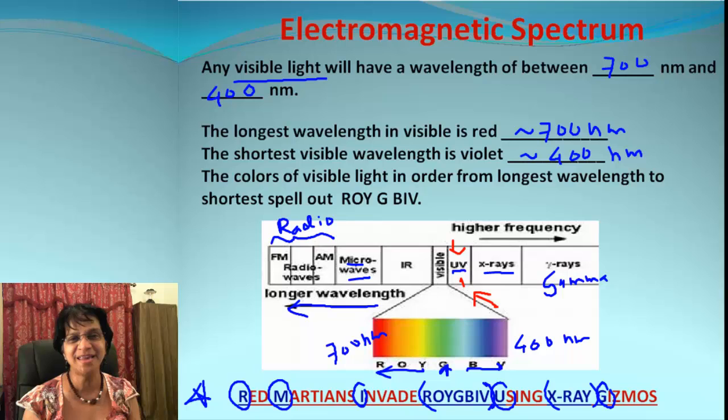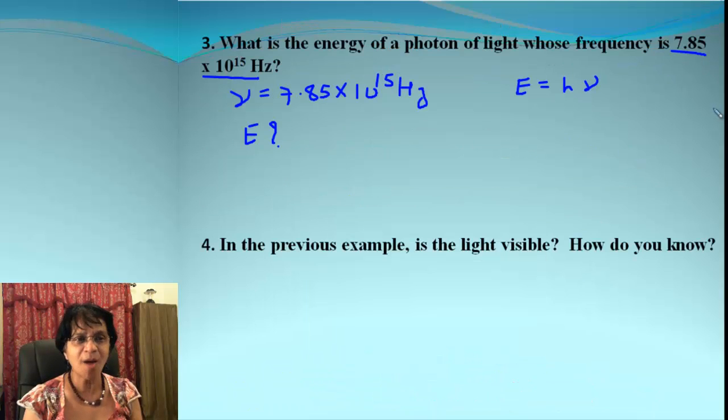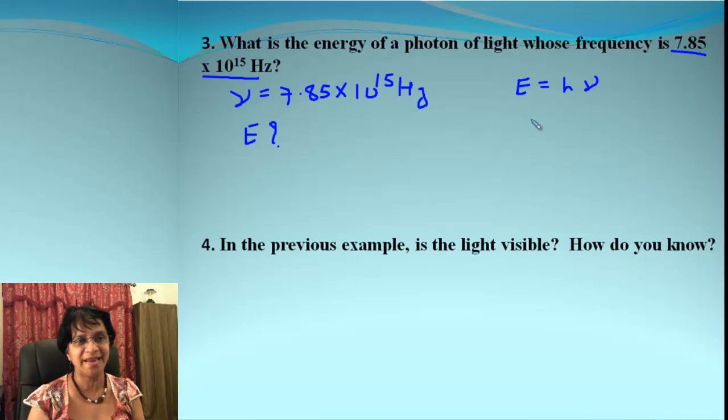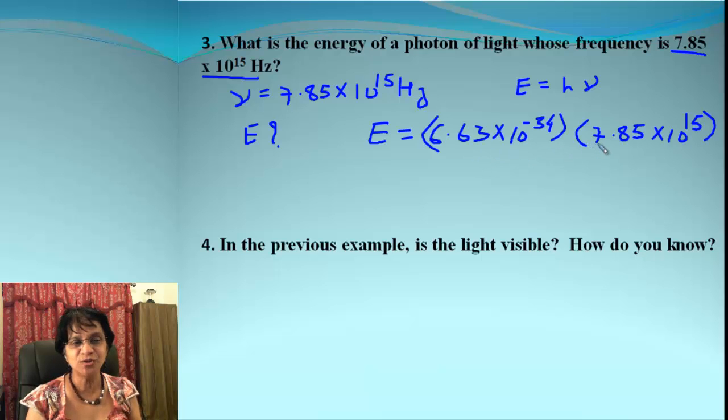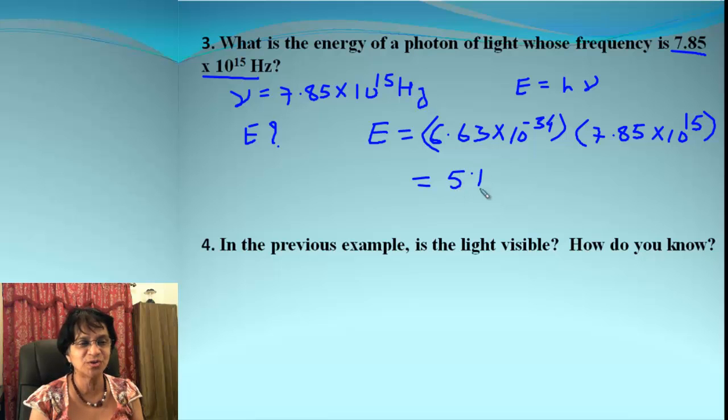Let's move on to the next problem. Frequency is given here and our job is to find out energy. Energy is equal to h × ν, where h is Planck's constant. So that's what we get when we plug the values for both h and ν, and when we solve, the final answer is 5.19 × 10^-19 joules.